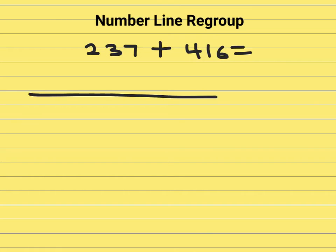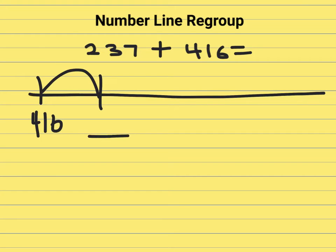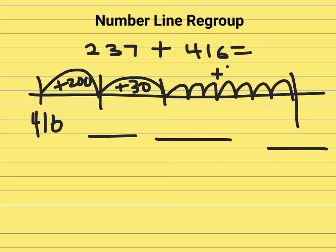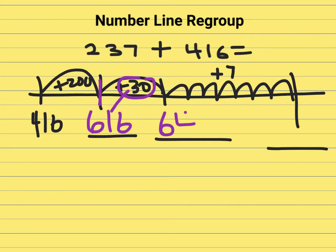I'll solve this problem using an open number line. I'll begin with 416. I will jump 200, then I will jump 30, then I will jump 7. Each one of these jumps is a 1. So I'll go back to 416 — 200 more is 616. 30 more is 646.